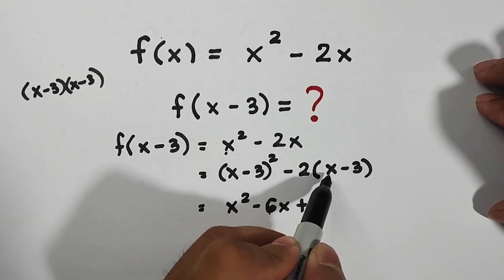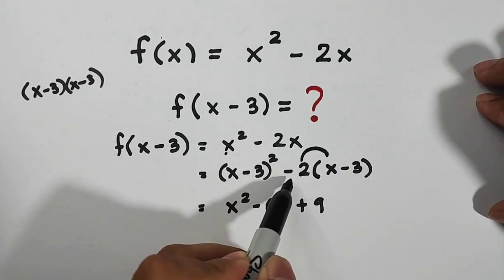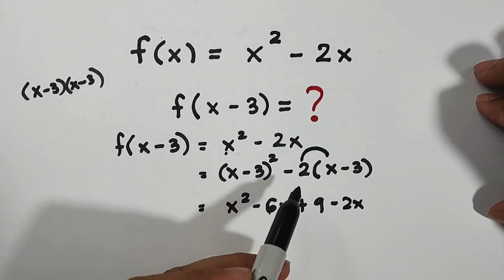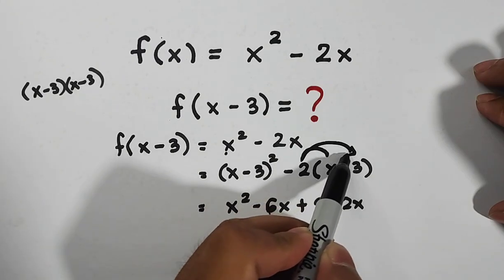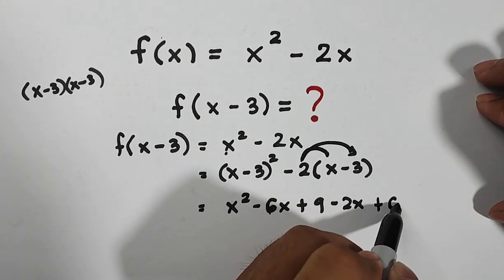Next we have negative 2 times (x - 3). Using distributive property, negative 2 times x is negative 2x. Negative 2 times negative 3 is equal to plus 6 or positive 6.